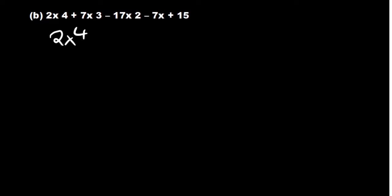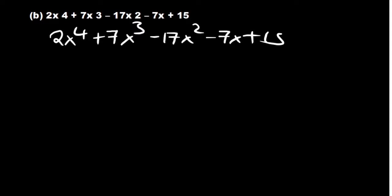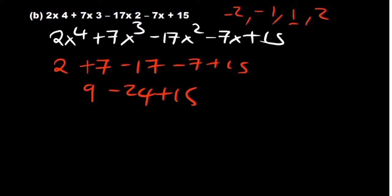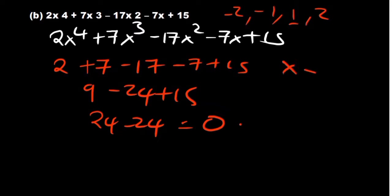The second question: 2x⁴ plus 7x³ minus 17x² minus 7x plus 15. We try to find the value of x that gives a 0. Starting with 1: we have 2 plus 7 minus 17 minus 7 plus 15. 2 plus 7 is 9, minus 17 gives minus 8, minus 7 gives minus 15, plus 15 gives 0. So 15 plus 9 is 24, minus 24 — that is equivalent to 0. Therefore x equals 1 is a factor of that function.